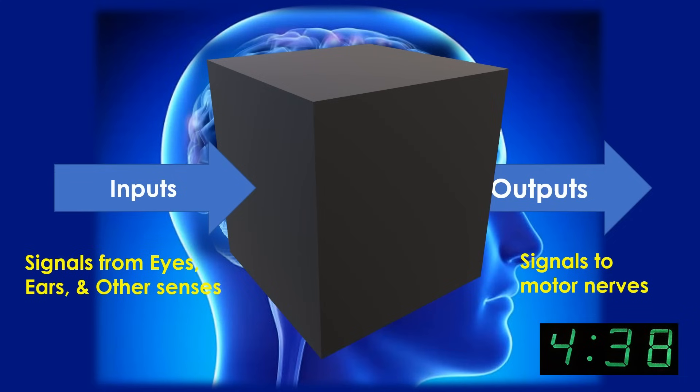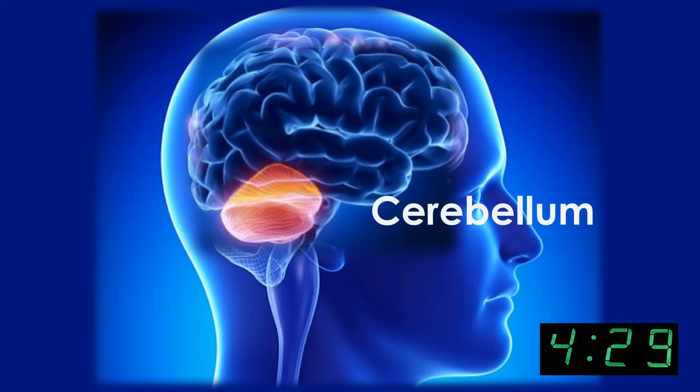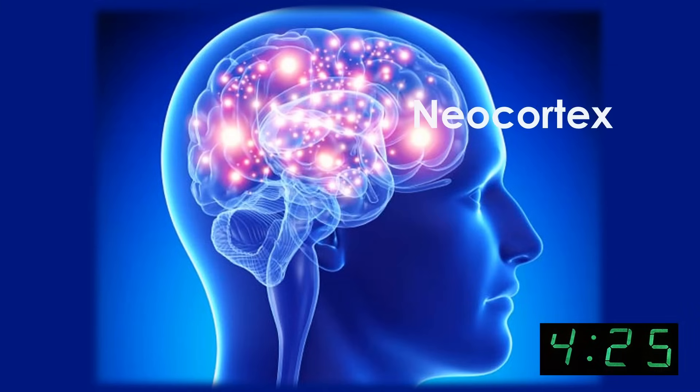But what goes on inside the black box? To start with, your brain stem takes care of all of the housekeeping, and your cerebellum remembers sequences of physical actions which allow your body to take coordinated actions while your neocortex does the thinking.